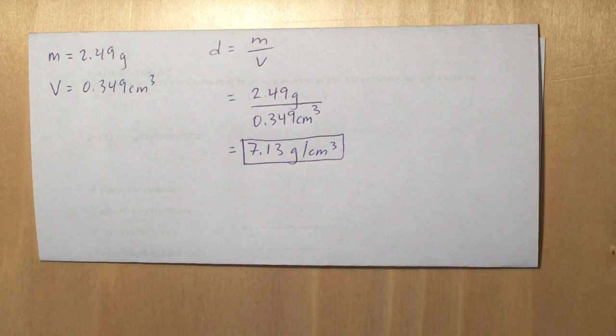So this one is asking us if the new penny is made out of pure copper, and it gives us the mass of the penny and the volume of the penny, which I've written there on the left side.